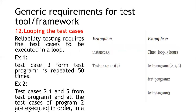The next requirement is looping of test cases, which is important for reliability testing. There are two types: iteration loop and timed loop. In an iteration loop, 'repeat,50 test_program_1 of 3' executes test program 1 with test case 3 fifty times. In the timed loop, we tell the test tool to execute for 5 hours — it will execute all the specified test programs and their test cases (for example, test program 1 with test cases 2, 1, and 5; test program 2 with all test cases; test program 3 with all test cases) for 5 hours.